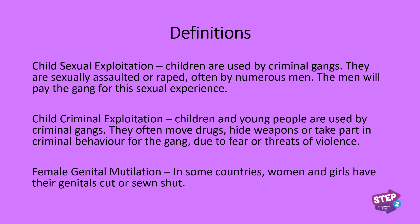So to start with we've got some definitions. There are two main types of child exploitation. You've got child sexual exploitation, sometimes called CSE. This is when children are being used by criminal gangs — they are sexually assaulted or raped, often by numerous men. The men will pay the gang for this sexual experience.